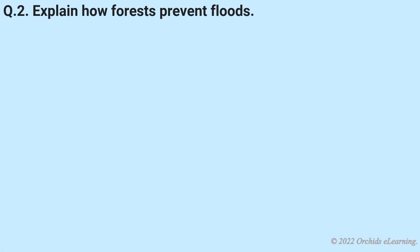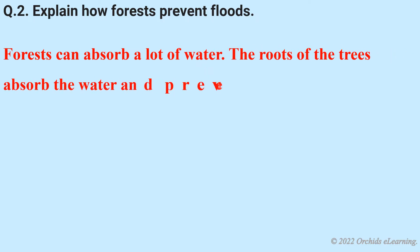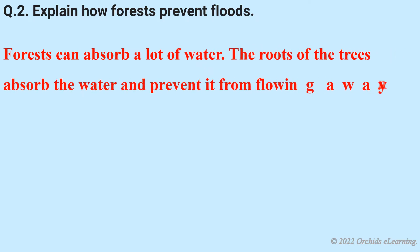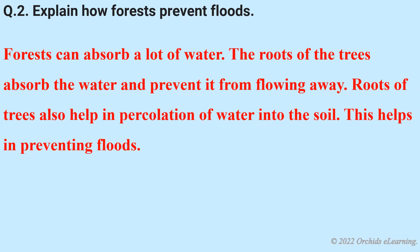Question: Explain how forests prevent floods. Forests can absorb a lot of water. The roots of the trees absorb the water and prevent it from flowing away. Roots of trees also help in the percolation of water into the soil. This helps in preventing floods.